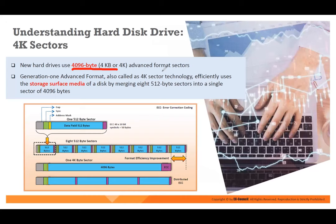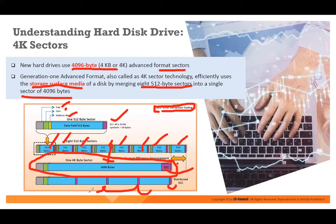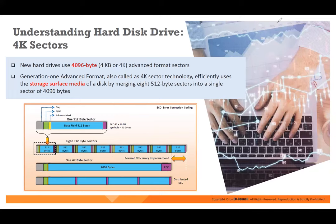New HDDs use 4K advanced format sectors. It can merge eight 512-byte sectors into a single 4K sector. ECC is error correction coding — if there is any error in the stored data, the error code will identify and correct it. The error is distributed across multiple locations so it can be easily corrected. This is the format of a hard disk drive with 4K sectors.